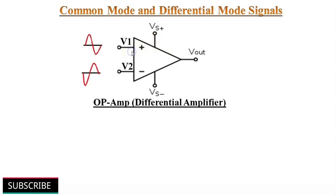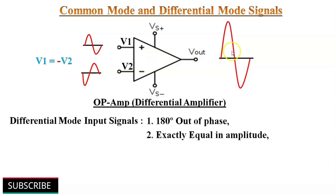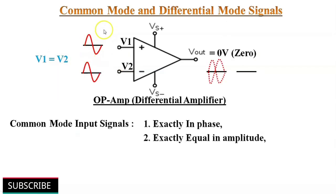When the input signals to a differential amplifier are 180 degrees out of phase and exactly equal in amplitude — meaning V1 equals minus V2 — they are called differential mode signals. Differential mode signals are amplified by the operational amplifier, because the difference in the signals is twice the value of each signal. Thus, a differential amplifier will amplify the differential mode signal while it will reject the common mode signal.